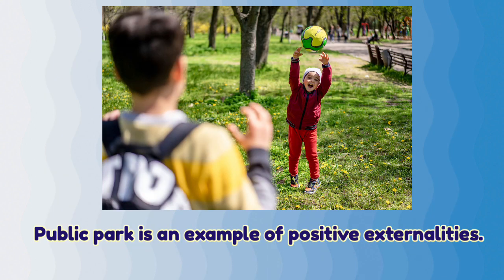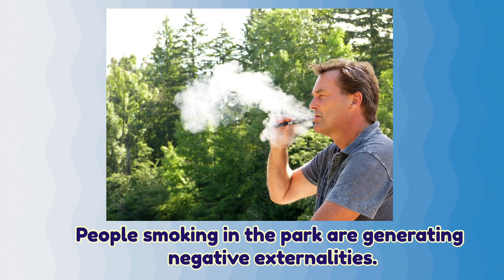For example, consider a public park used by people for pleasure for which they have not made any payment — this is an example of positive externality. On the other hand, a group of people smoking in the park creates negative externality for which they are not always penalized.